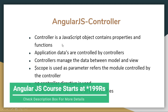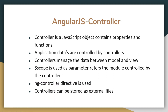A controller is a JavaScript object. It contains properties and functions. We already know that AngularJS is based on HTML and JavaScript. The controller is a JavaScript object that contains properties and functions. Properties include things like first name and surname.